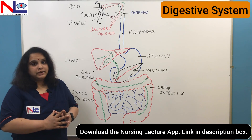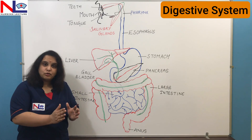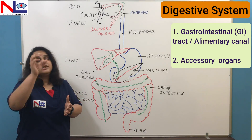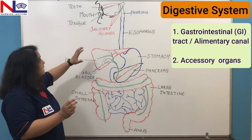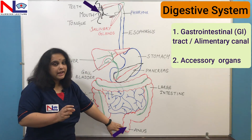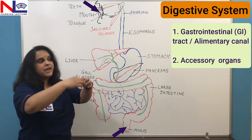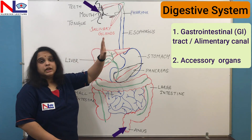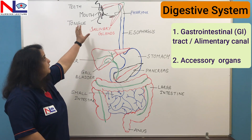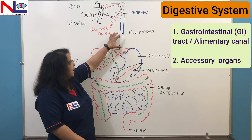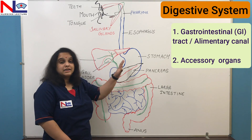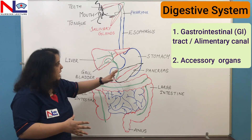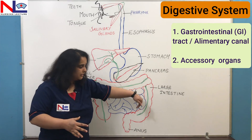The digestive system is divided into two parts. The first is the GI tract, or gastrointestinal tract, also called the alimentary canal. This is a tubular structure that starts from the mouth and ends at the anus. The organs present in the GI tract are: the mouth, pharynx, esophagus (the food pipe), stomach — where food stays for a few hours for mixing with enzymes and secretions — then the small intestine, and finally the large intestine.